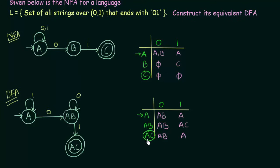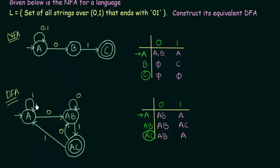Now let's come to AC. AC on getting input 0 goes to AB. AC on getting input 1 goes to A. Now we have drawn the transition diagram for this DFA and we have successfully converted this NFA to its equivalent DFA.